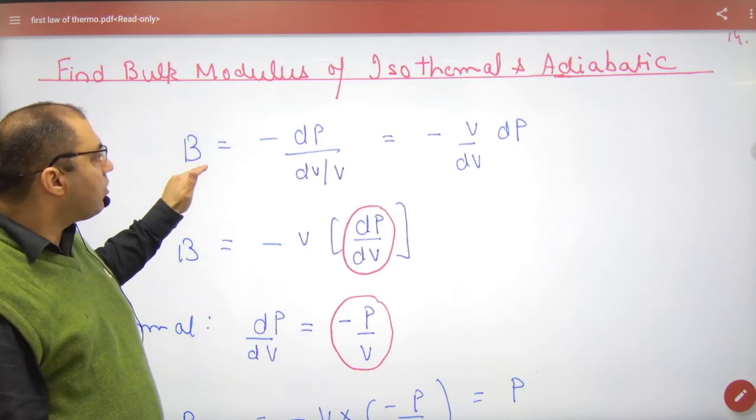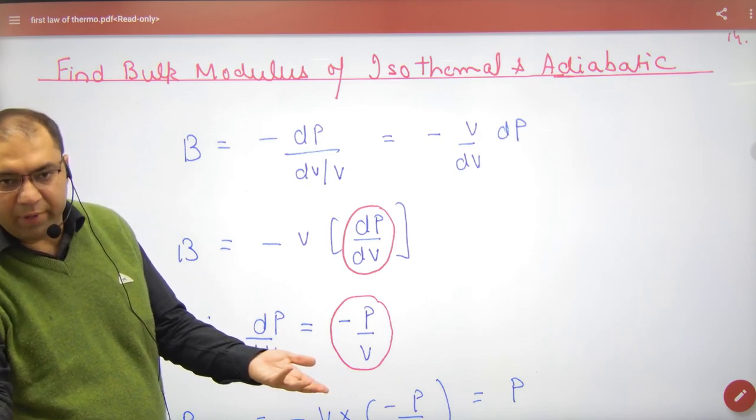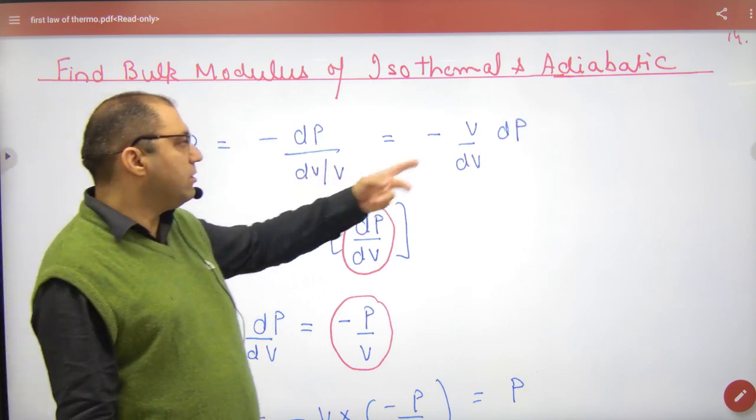So bulk modulus, what is it? Minus change in pressure, pressure change dP, divided by volumetric strain dV by V. So cross multiply the terms.